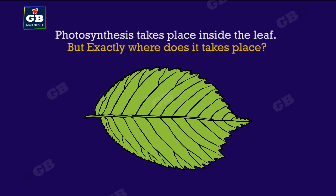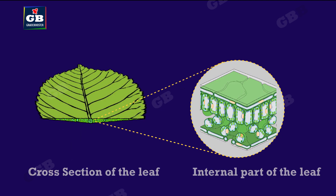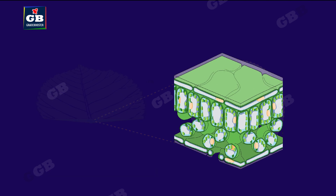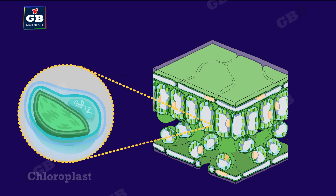Photosynthesis takes place inside the leaf, but exactly where does it happen? If we see the cross-section of a leaf, we will find cells with green-colored structures called chloroplasts. This is the exact site of photosynthesis.